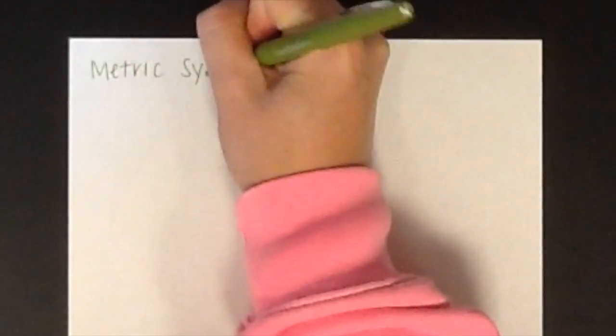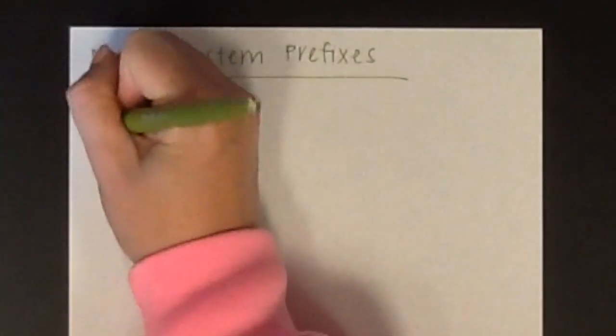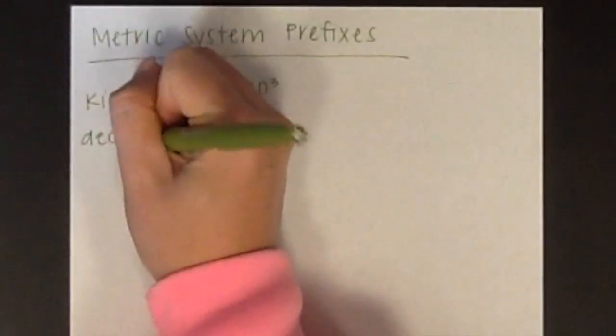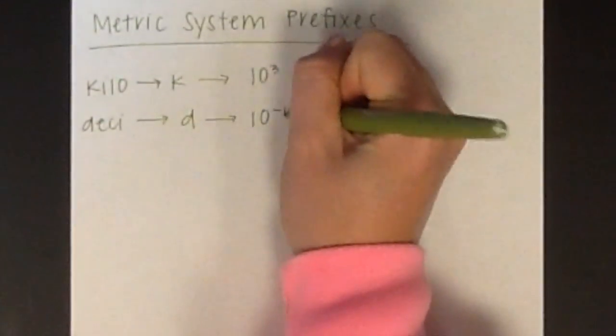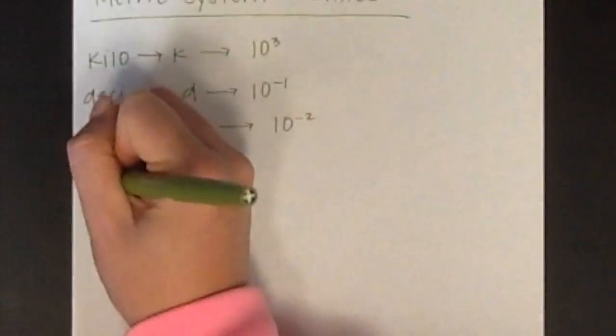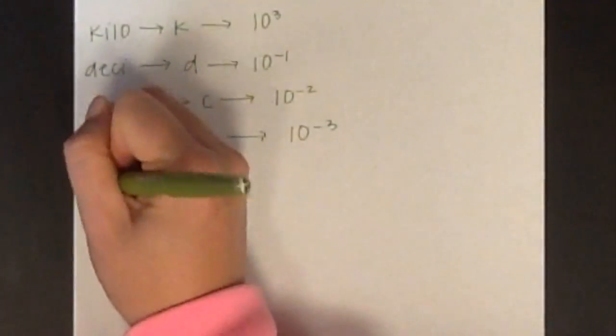The metric system uses a set of prefixes that you should be aware of. These include kilo, which is abbreviated K; desi, which is abbreviated D; centi, which is abbreviated C; milli, which is abbreviated M; micro, which is abbreviated mu; and nano, which is abbreviated N.